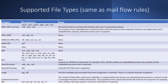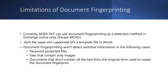What are the supported file types? It's actually the same as mail transport rules in Exchange Online — PDFs, Office documents, and images are among the supported file types. As for limitations, currently Microsoft 365 DLP can use document fingerprinting as a detection method in Exchange Online only. That means this does not work, at least right now, with things like endpoint DLP.